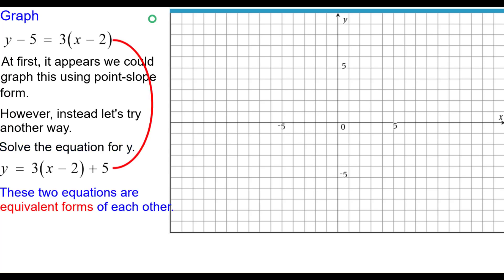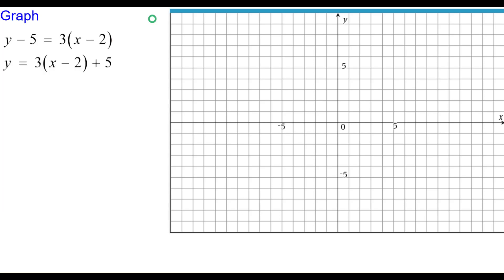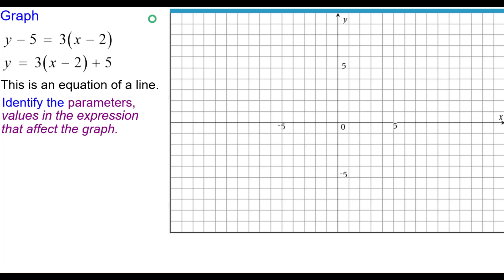Notice that these two equations are equivalent forms of each other. So this is an equation of a line. We need to identify the parameters like we would in a transformation. These are values in the expression that affect the graph. And so there are three parameters here: 3, minus 2, and plus 5.